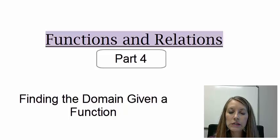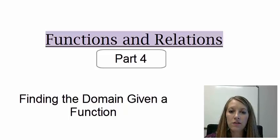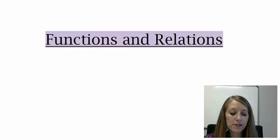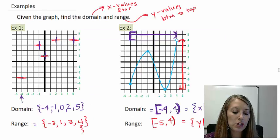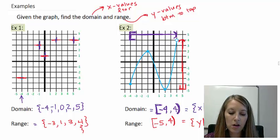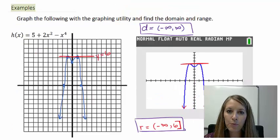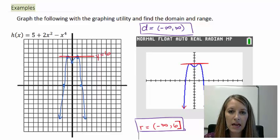We are working with functions and relations — more specifically, with domain and range and how to find them. In the last video, we figured out how to find domain and range by looking at graphs. In the first example we had ordered pairs, in the second we had a piece of a graph. We know that the domain consists of the x values and the range consists of the y values. We also did an example where they gave us the function and we used the graphing calculator to graph it, then interpreted domain as x values and range as y values.